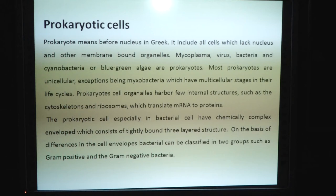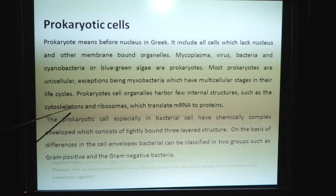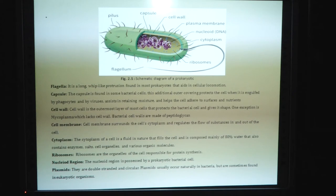Pili are structures made up of protein that facilitate movement and communication between cells. This is a schematic diagram of a prokaryotic cell. In this cell, the flagellum is found. It is a long, whip-like protrusion found in most prokaryotic cells that aids in cellular locomotion. Another structure is the capsule. The capsule is found in some bacterial cells. This additional outer covering protects the cell when it is engulfed by phagocytes and by viruses, and helps in retaining moisture and helps cells adhere to surfaces and nutrients.